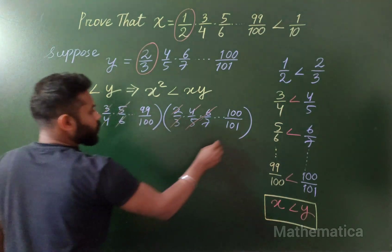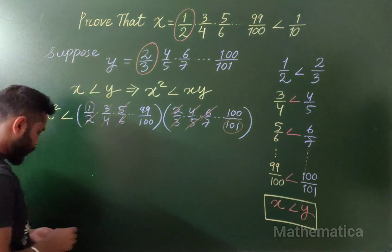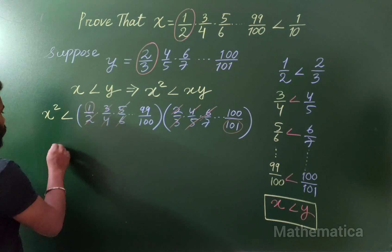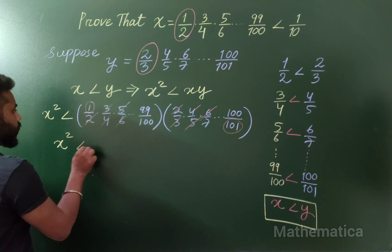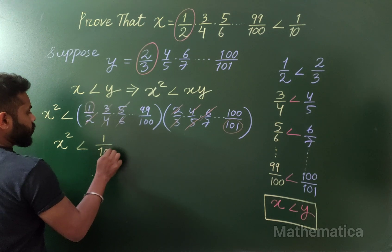Only the first one and last one are left. So we can write that x² is less than 1/101.